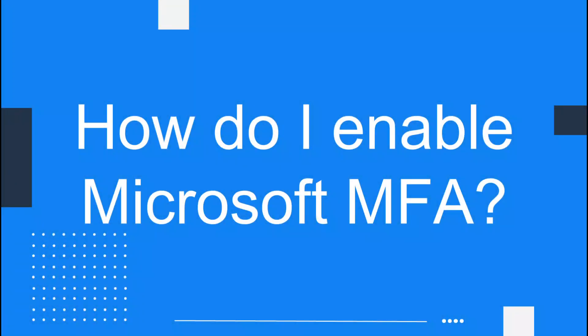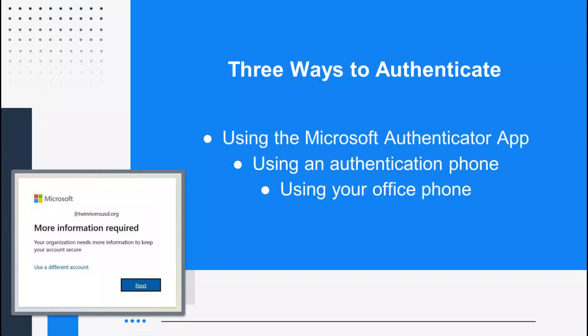How do I enable Microsoft MFA? When you are enrolled in MFA, after entering your username and password, you'll be prompted to provide additional security information in one of three ways: one, using the Microsoft Authenticator app; two, using an authentication phone or cell phone; or three, using your office phone.